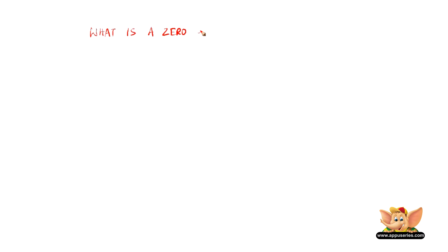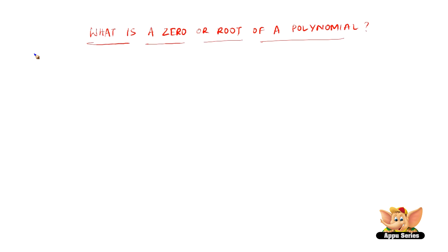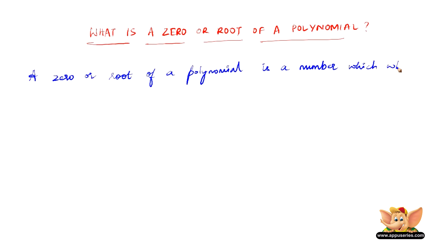What is a zero or root of a polynomial? A zero or root of a polynomial is a number which, when substituted for the variable, reduces the polynomial to zero.